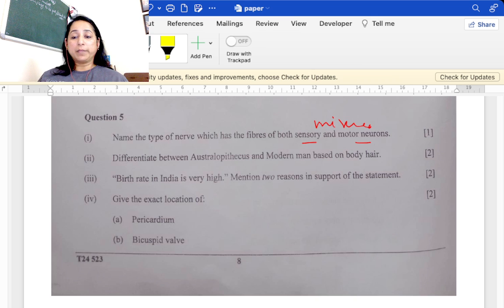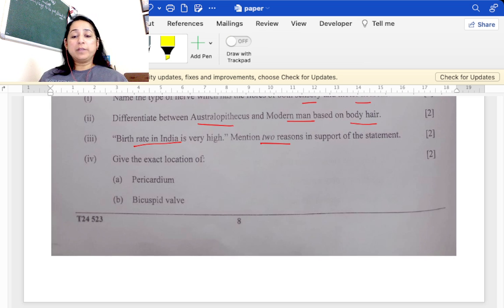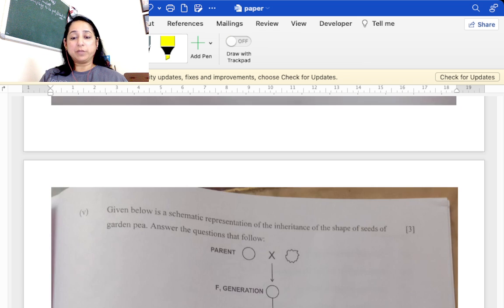Name the type of nerves which have fibers both of sensory and motor nerve, that's a mixed nerve, example is optic nerve. Differentiate between Australopithecus and Neanderthal man on the basis of body hair: body hair reduced. Birth rate in India is very high, two reasons for that: one, desire for a male child, and two, illiteracy or lack of awareness. Exact location of the following: pericardium around the heart, bicuspid valve in between left atrium and ventricle.